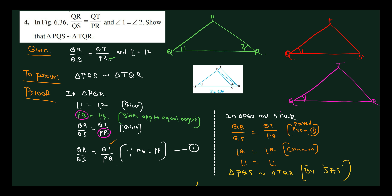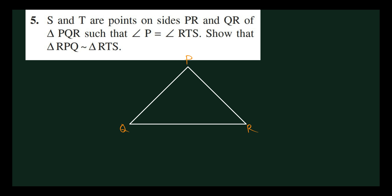Is it clear everyone? Next: S and T are the points on the sides PR and QR of triangle PQR, such that angle P equals angle RTS.